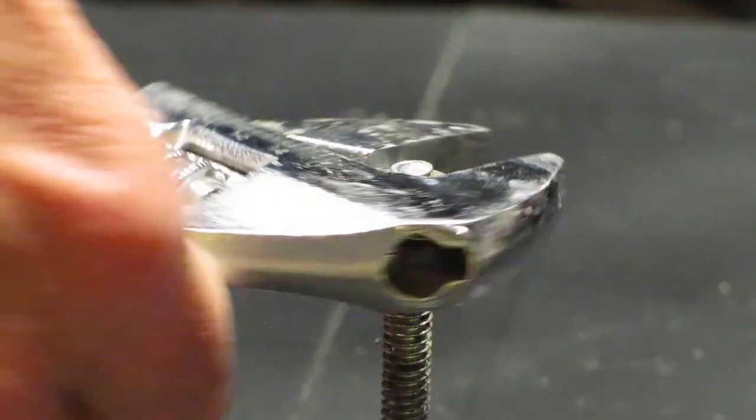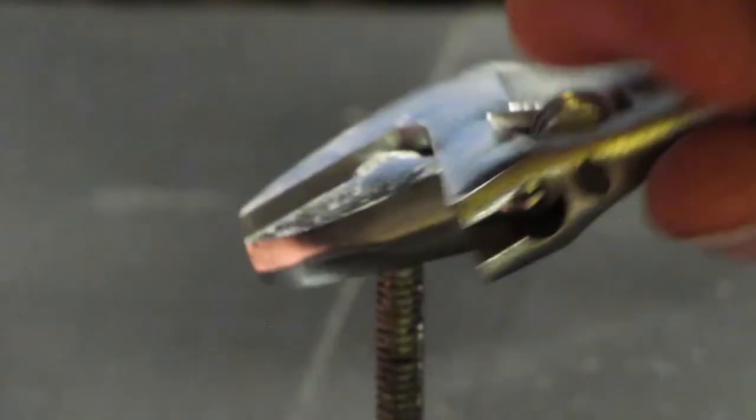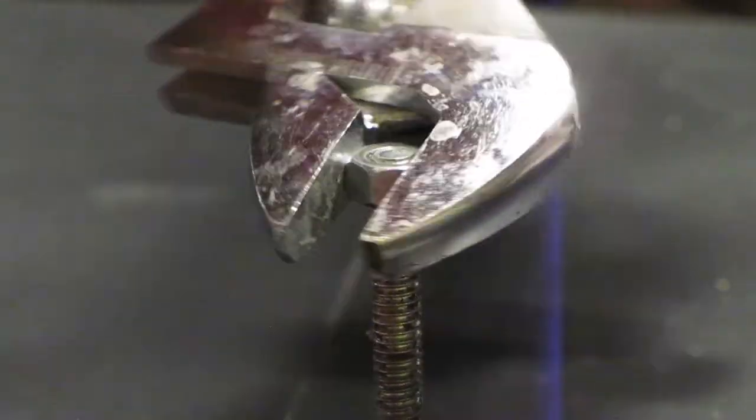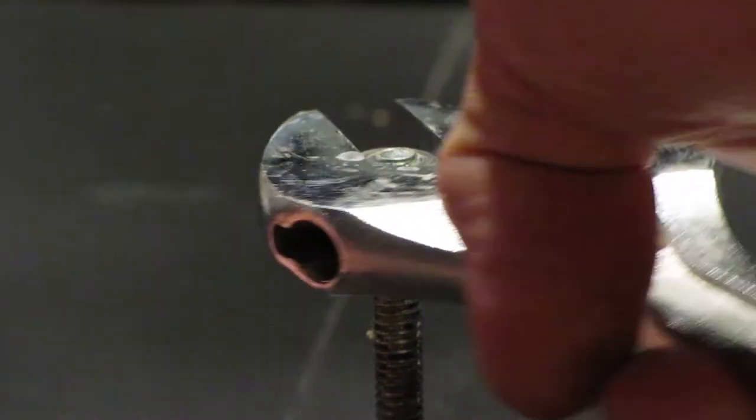Now turn the whole wrench counterclockwise, lefty-loosey, and the nut loosens on the bolt. To tighten the nut, simply turn the wrench clockwise, righty-tighty, and the nut cinches down. It's astoundingly easy.